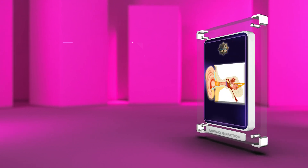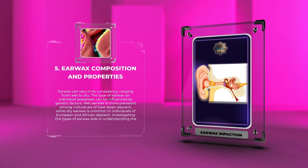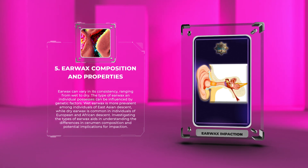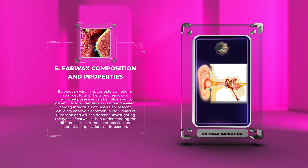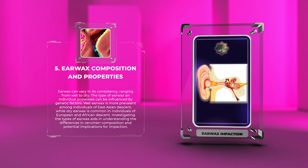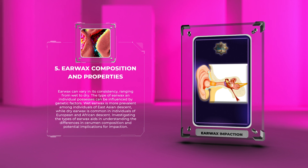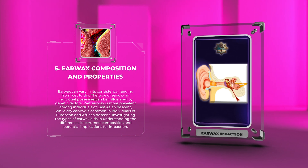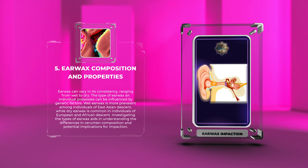Earwax can vary in its consistency, ranging from wet to dry. The type of earwax an individual possesses can be influenced by genetic factors. Wet earwax is more prevalent among individuals of East Asian descent, while dry earwax is common in individuals of European and African descent. Investigating the types of earwax aids in understanding the differences in cerumen composition and potential implications for impaction.